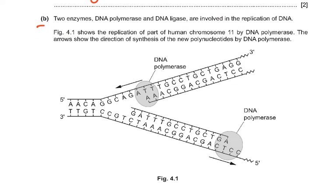Two enzymes, DNA polymerase and DNA ligase, are involved in the replication of DNA. Figure 4.1 shows the replication of part of human chromosome 11 by DNA polymerase, showing the direction of synthesis of new polynucleotides. There is a leading strand and a lagging strand; the 5' to 3' direction is on the leading strand, and the other 5' to 3' synthesis occurs in fragments.